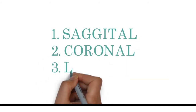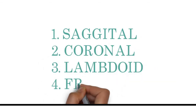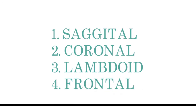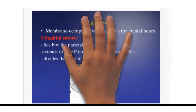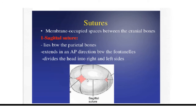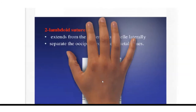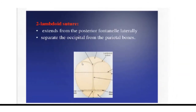There are four types of sutures: the sagittal suture, which is an anteroposterior suture; the coronal suture and lambdoid sutures, which are transverse sutures; and the frontal suture, which is again an anteroposterior suture. The sagittal suture separates the two parietal bones — the right and left parietal bones — and extends anteroposteriorly, dividing the head into right and left halves. The second suture is the lambdoid suture, which is a transverse suture.